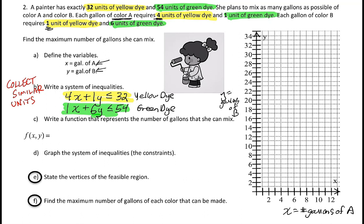Technically, we have two other constraints. The number of gallons of X has to be greater than or equal to zero, and the number of gallons of Y has to be greater than or equal to zero. These are typical constraints in linear programming problems — we're only working in the first quadrant, with positive X's and positive Y's.